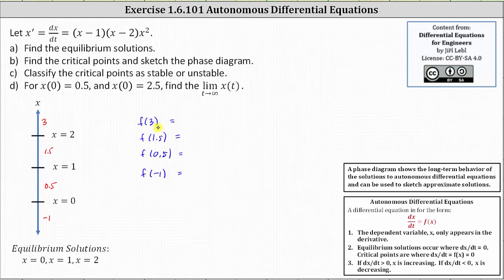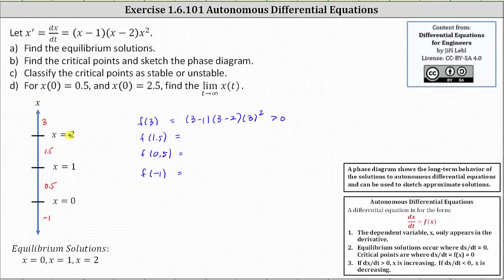f of three is equal to dx/dt when x equals three, indicating f of three equals the quantity three minus one times the quantity three minus two times the square of three. We have a positive times a positive times the square of a positive, which is positive or greater than zero. This indicates when x is greater than two, as t approaches infinity, x of t increases, and therefore we draw an upward arrow when x is greater than two.